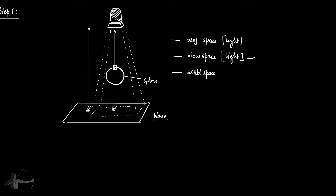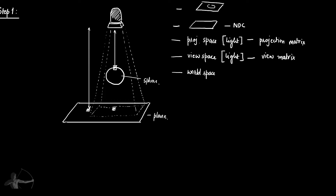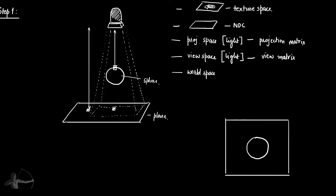We use the view matrix of the light for view space and the projection matrix of the light for projection space. The projection space is then transformed into normalized device coordinates (NDC), and NDC is transformed into texture space. That is how the depth map is stored as a texture. At the end of step one, we have a z-depth texture called the light depth map texture, rendered from the light's perspective.